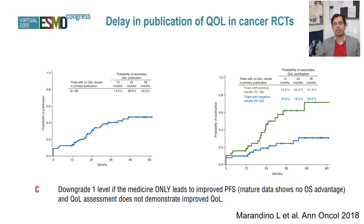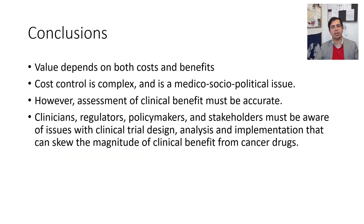The final issue is publication bias. There is publication bias in publishing quality-of-life data from cancer drug trials — especially if the trial is negative, there is a significant delay in publication of quality-of-life results. Quality of life is an important component of trial evaluation in making a judgment about the clinical benefit of a cancer drug.